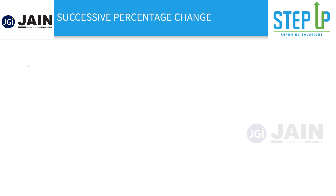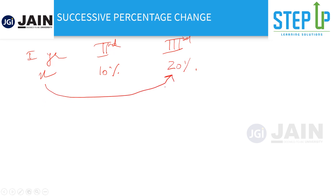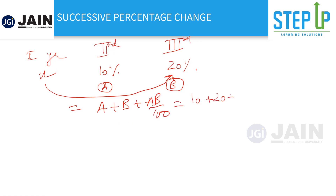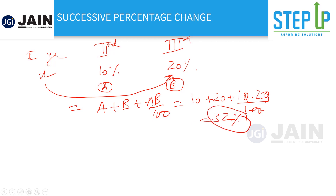Now let's move on to successive percentage change. Let's say you joined college and got X marks in first year. You worked harder and got a 10% increase in second year and a 20% increase in third year. The formula for the resultant change is A plus B plus AB upon 100. So this becomes 10 plus 20 plus (10 into 20) upon 100, which gives 30 plus 2 — that's 32%. That's the concept of successive percentage change.